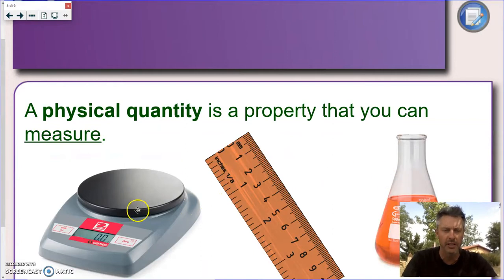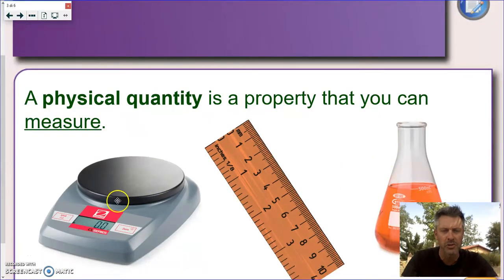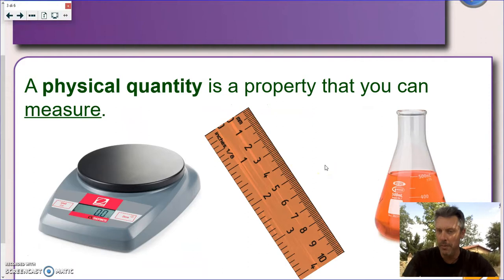You can see a few here. You can see an electric balance, you can see a ruler, you can see a conical flask. All tools that we're going to, or maybe you already learned how to use them, but we're going to use over and over again in our classes.